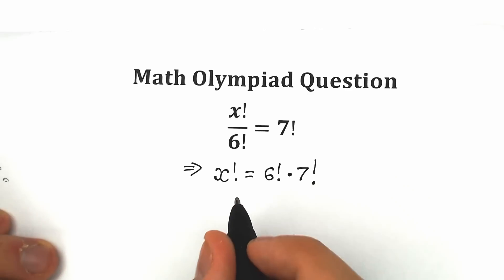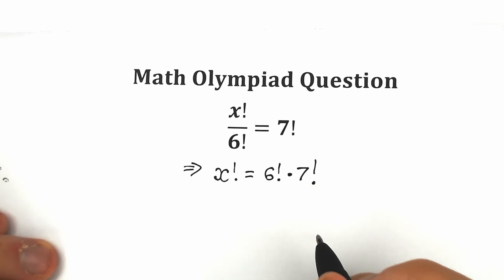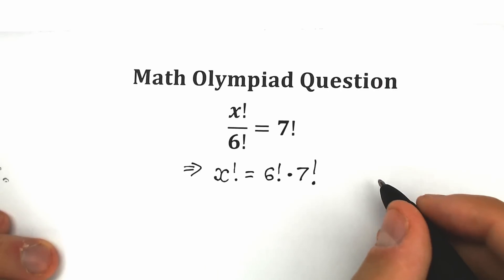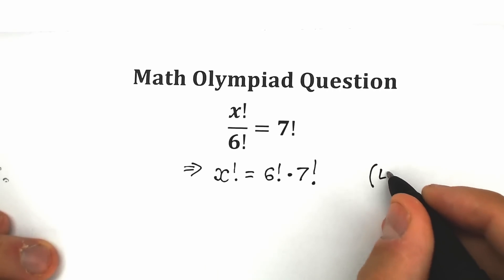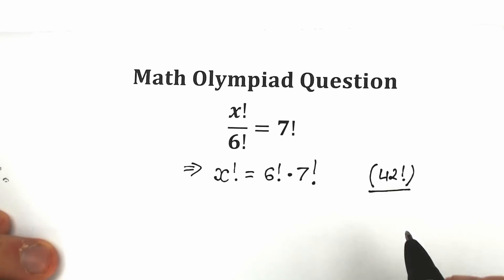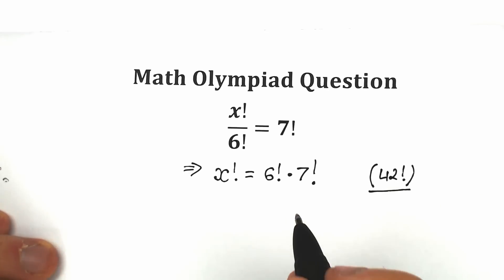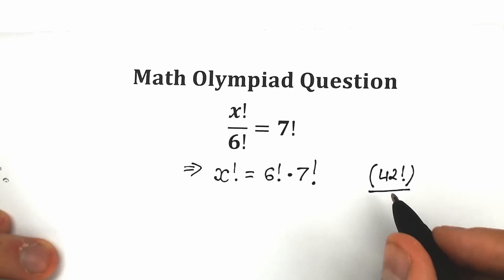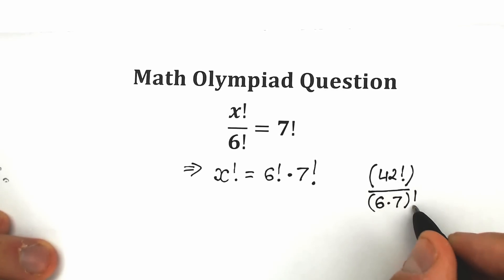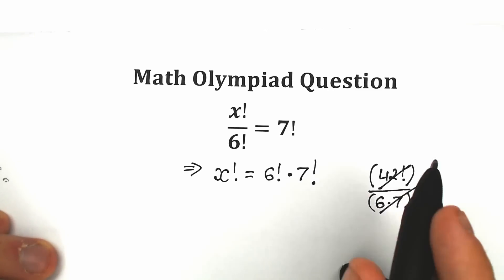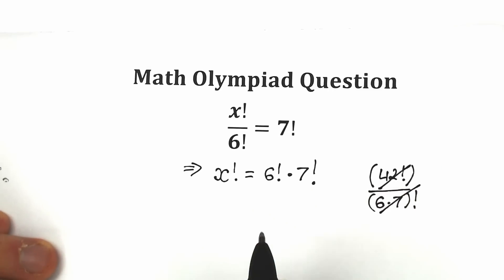A lot of students at this moment make a very easy mistake: they multiply 6 times 7 and say the correct answer is 42 factorial. This is a very popular mistake, and I want to say this is an absolutely wrong approach. We can't multiply this way — we can't write this as 6 times 7 factorial. This is a really bad mistake in terms of math.